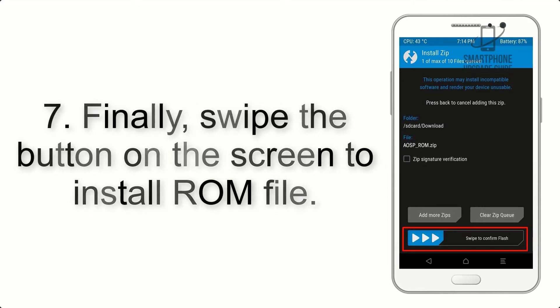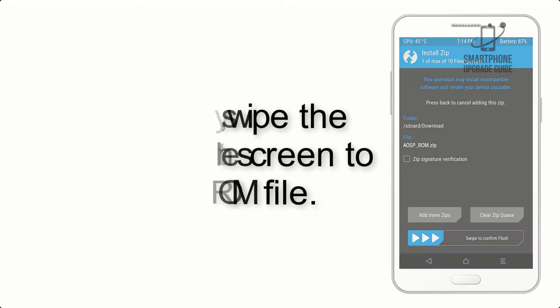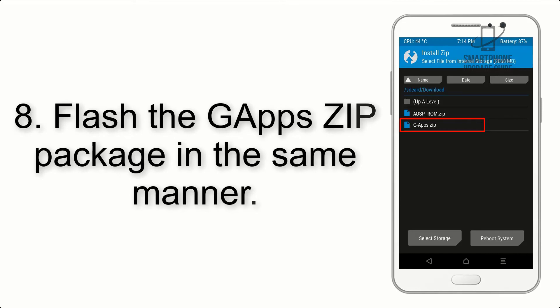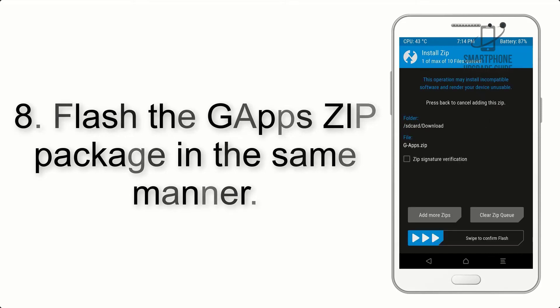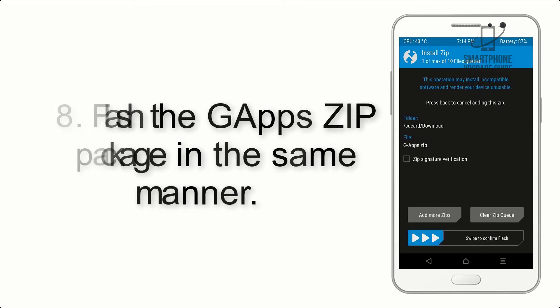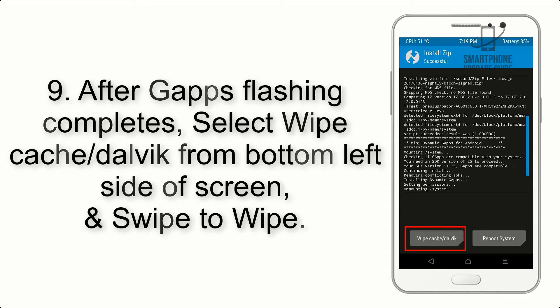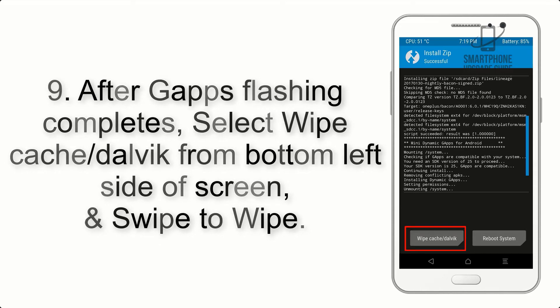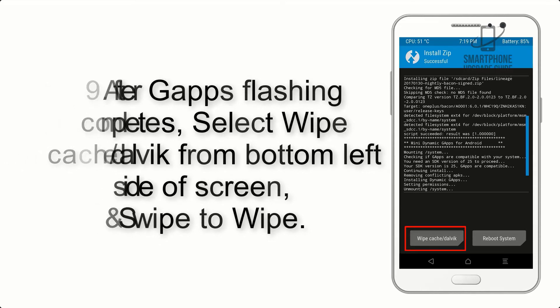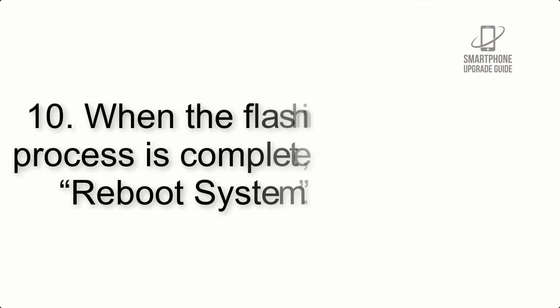Step 7: Swipe the button on the screen to install the ROM file. Step 8: Flash the GApps zip package in the same manner. Step 9: After GApps flashing completes, select Wipe Cache and Dalvik from the bottom left side of the screen and swipe to wipe.